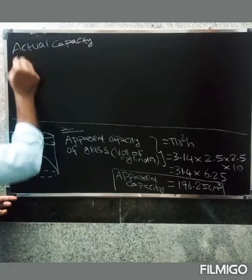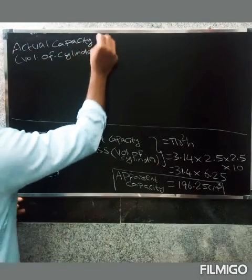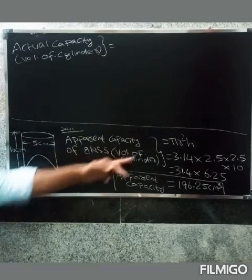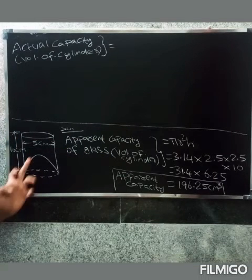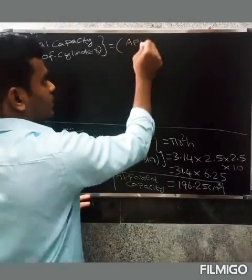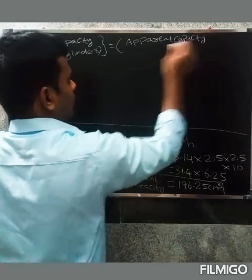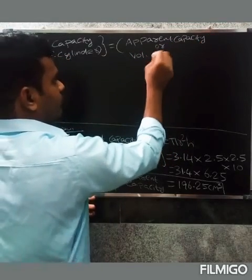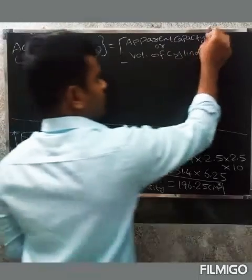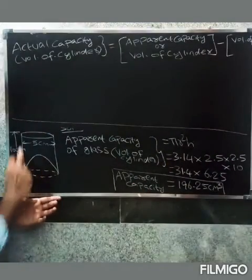This gives the same volume as the cylinder. But actual capacity is the total volume of cylinder minus the volume of hemisphere. Apparent capacity equals volume of cylinder minus volume of hemisphere.